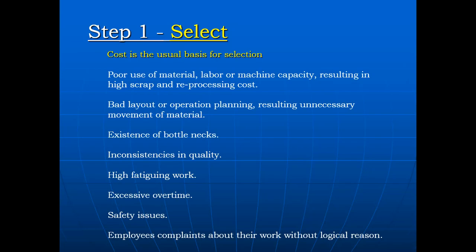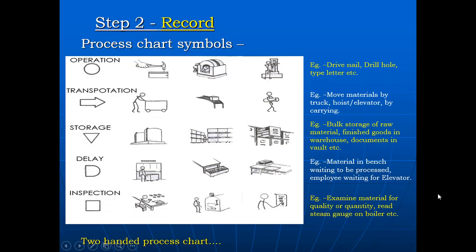Cost is the usual basis for selection. Indicators include: poor use of material, labor or machine capacity resulting in high processing cost; bad layout or operation planning resulting in unnecessary movement of material; existence of bottlenecks; inconsistencies in quality; high fatiguing work; excessive overtime; safety issues; and employees' complaints about their work without logical reason. Step 2: Record — process chart symbols.